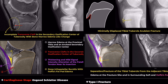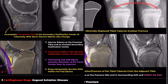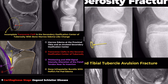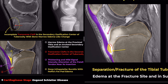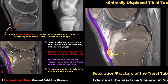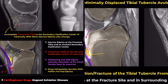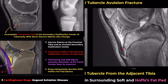First, let's look at the right case. In the plain radiograph, this patient shows a minimally displaced or non-displaced fracture. The MRI also reveals that the fracture of the distal tibial tubercle is separated from the adjacent tibia. As a result, there is edema at the fracture site and in the surrounding soft tissues, as well as in Hoffa's fat pad.